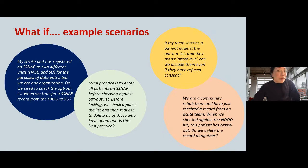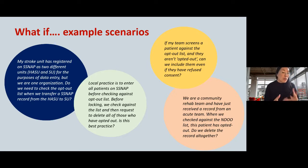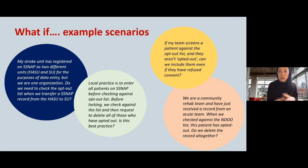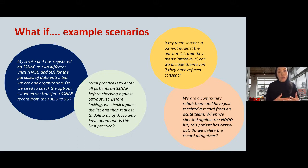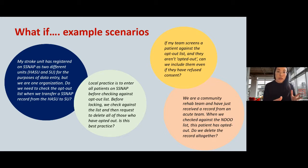Example scenario: a stroke unit is registered on SNAP as two different units — a HAS unit and an SU — but it's one organization. Do they need to check the opt-out list when transferring a SNAP record between them? The answer is no. If you're one organization, you only need to check once because the patient data never actually leaves your organization.